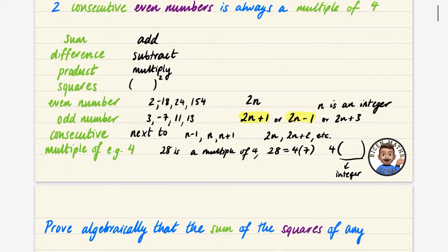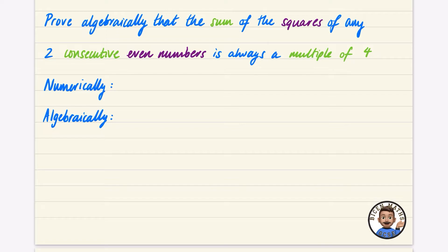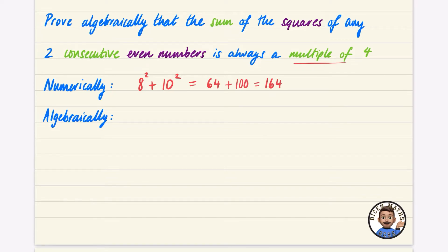Before doing the algebraic proof, let's just check numerically what this statement is talking about. Take the even number 8; the consecutive even number is 10. The sum of the squares is 8 squared plus 10 squared, which is 64 plus 100, giving 164. And 164 is a multiple of 4 because it equals 4 multiplied by 41.